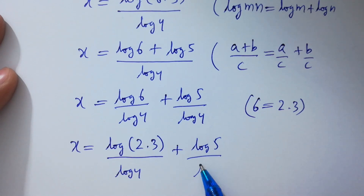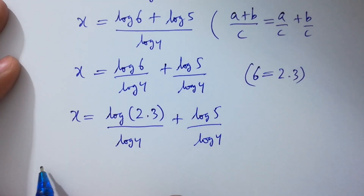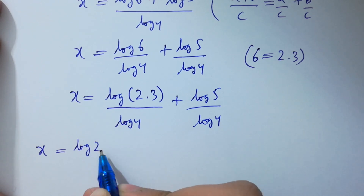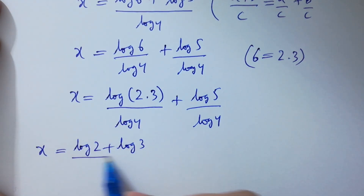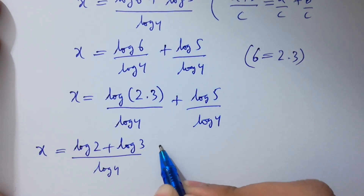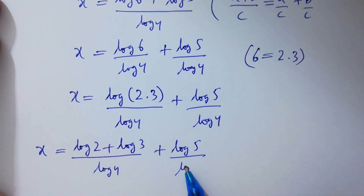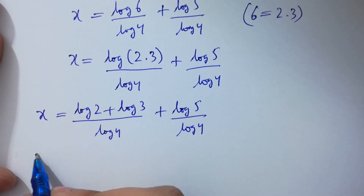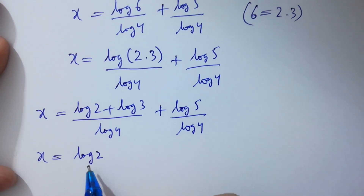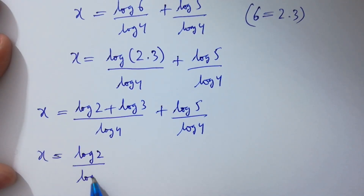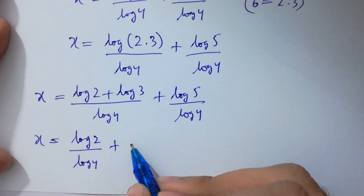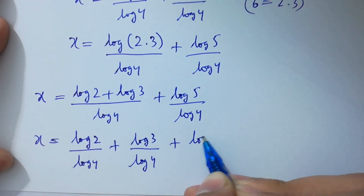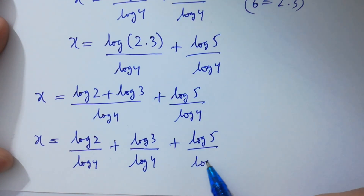Expanding further, x equals log 2 over log 4 plus log 3 over log 4 plus log 5 over log 4.